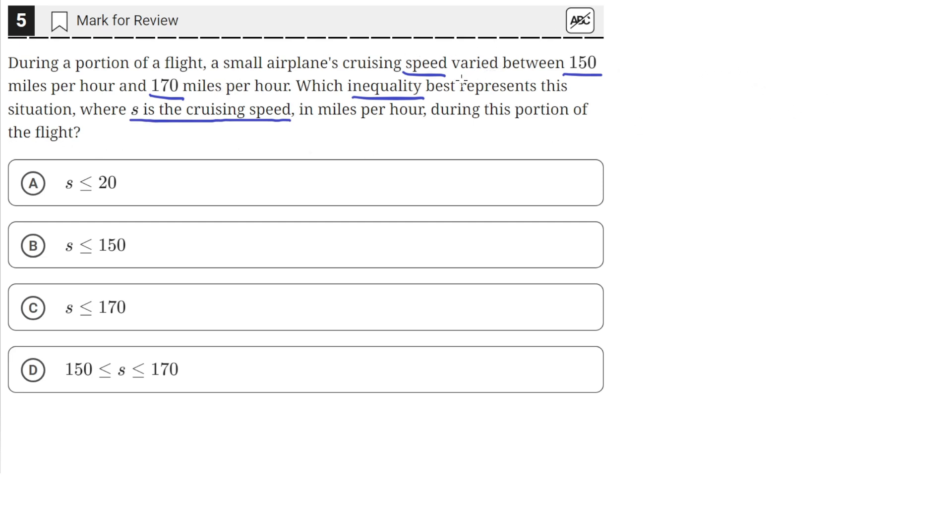So we have a plane that has varying speeds, and the speeds varied between 150 to 170 miles per hour. So that means at any given moment in this flight, or during this portion of the flight, the speed of the airplane was between 150 and 170.